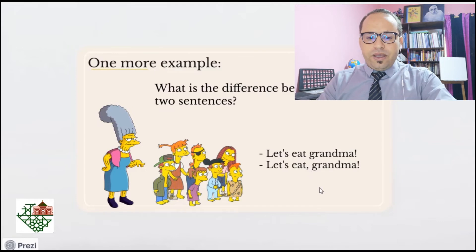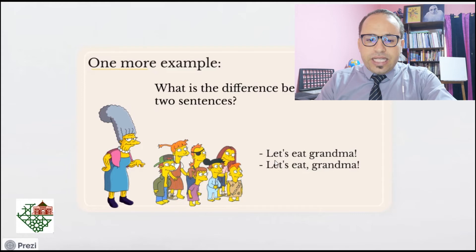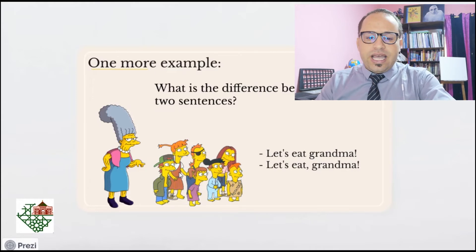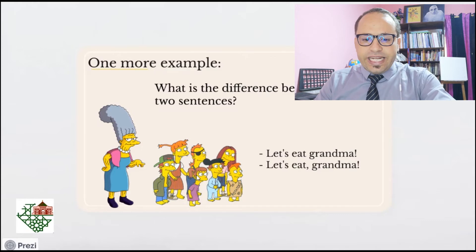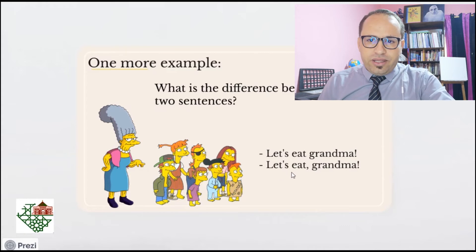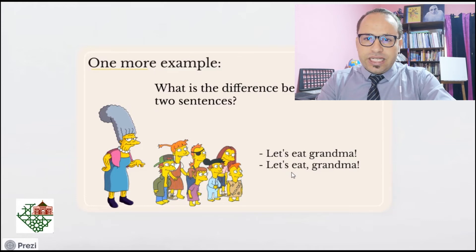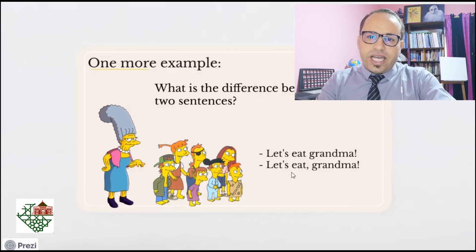In the first sentence, 'Let's eat grandma,' it seems like the children are inviting each other to eat their grandma — to devour her as if she were food and as if they were beasts or monsters. But in the second sentence, 'Let's eat, grandma,' the children are inviting their grandma to eat together with them. So a very small comma made a huge difference, and not using that comma in writing can result in a very huge misunderstanding. That's why we need to be aware of the importance of using grammar correctly.